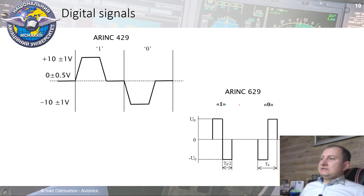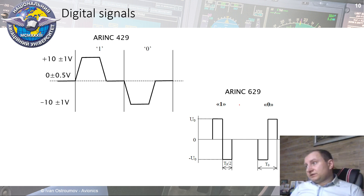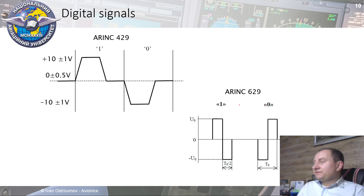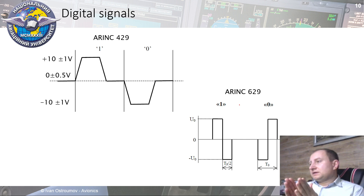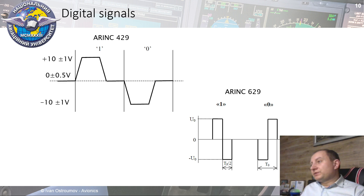At the physical level, binary signals are transmitted with analog signals, because binary is logical data but at the physical level when we touch this binary data we need to use an analog signal. We can use amplitude, frequency, or phase, however amplitude is used much more often. There are different representations of logical states.